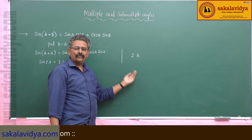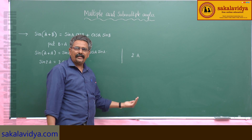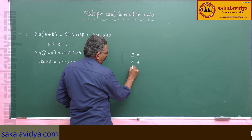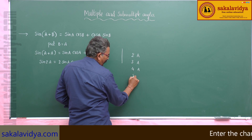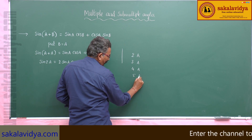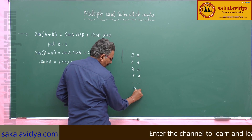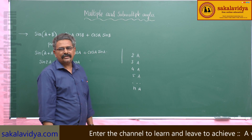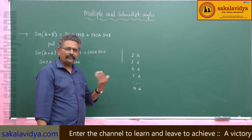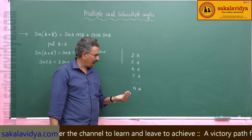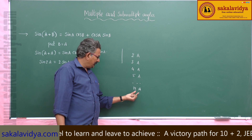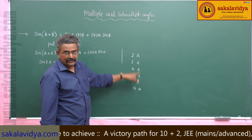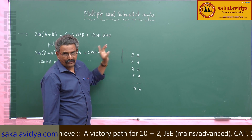Similarly, we get 3a, 4a, 5a and so on. We can write na where n is a positive or negative integer. These are called multiple angles.